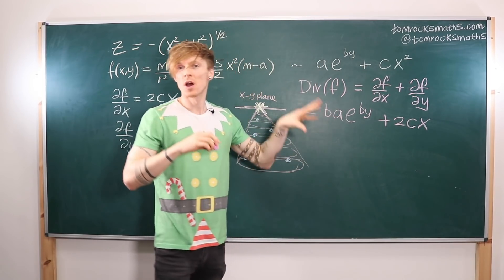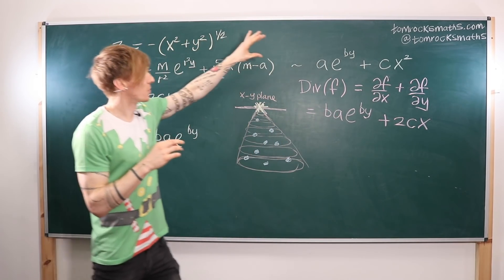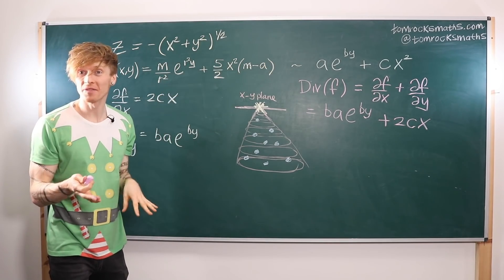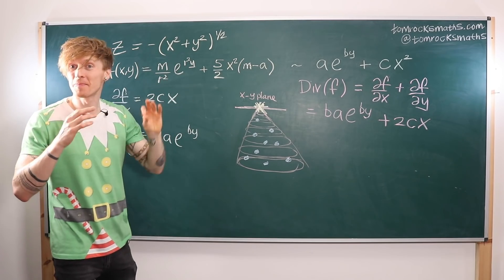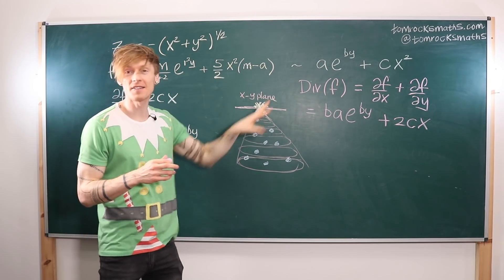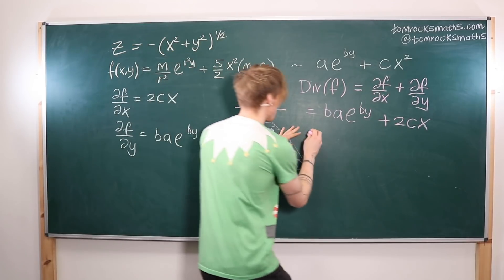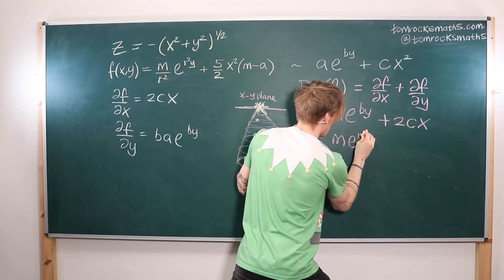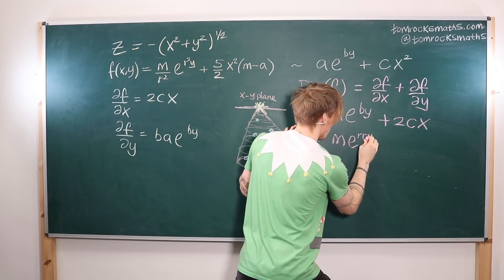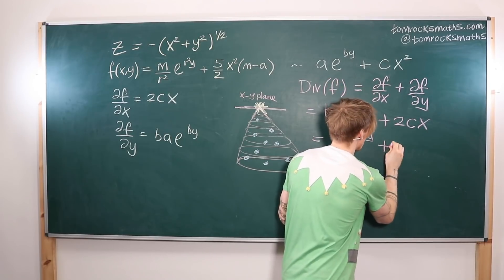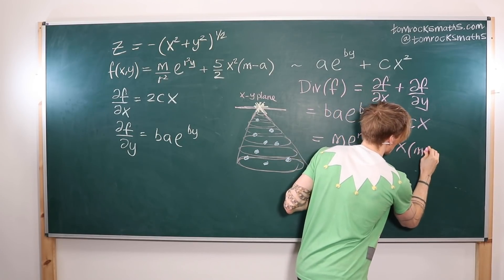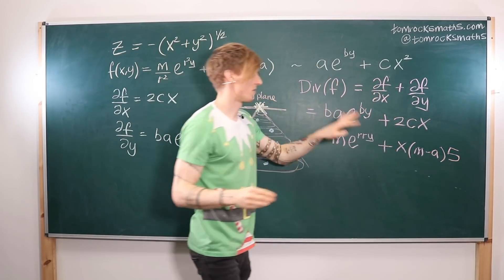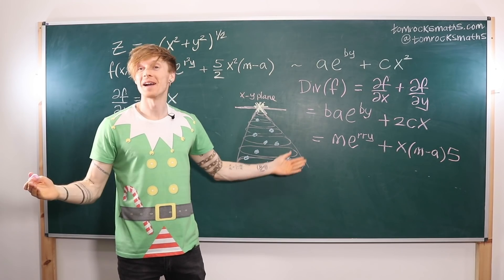Remembering that we substituted for a, b, and c from our original expression for f, we can now substitute back to get the final answer for the divergence of f, which equals m·e^(r²y) + 5x(m - a). Also known as Merry Christmas.